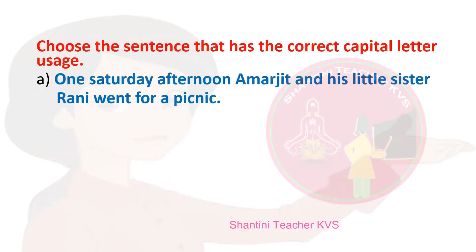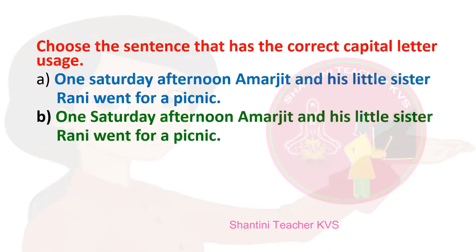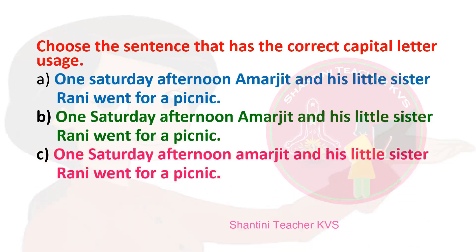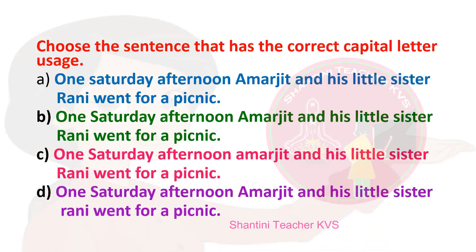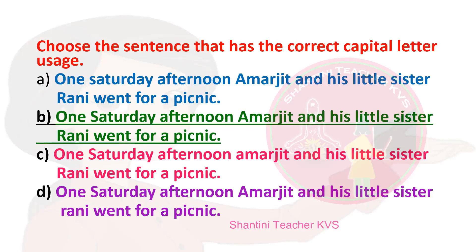'One Saturday afternoon, Amarjit and his little sister Rani went for a picnic.' Choose the sentence that has the correct capital letter usage. Is it option A, option B, option C, or option D? Yes, the right sentence that has the correct capital letter usage is option B.